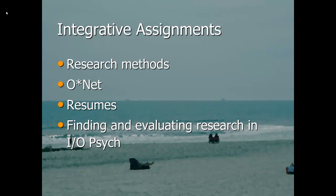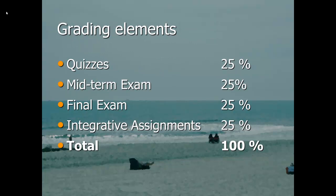Some topics for the integrative assignments: we'll have one on research methods in IO psychology, one on O-Net which is a very important tool that IO psychologists use, one on performance appraisals, and a final one on finding and evaluating research in IO psychology. For grading, basically everything is a quarter: the quizzes altogether are a quarter of your grade, the midterm and final are each a quarter, and the integrative assignments are a quarter. Each quiz is about 2.53% of your overall grade. Don't let any one element slide, because if you blow one thing, the highest you can get is a 75%.